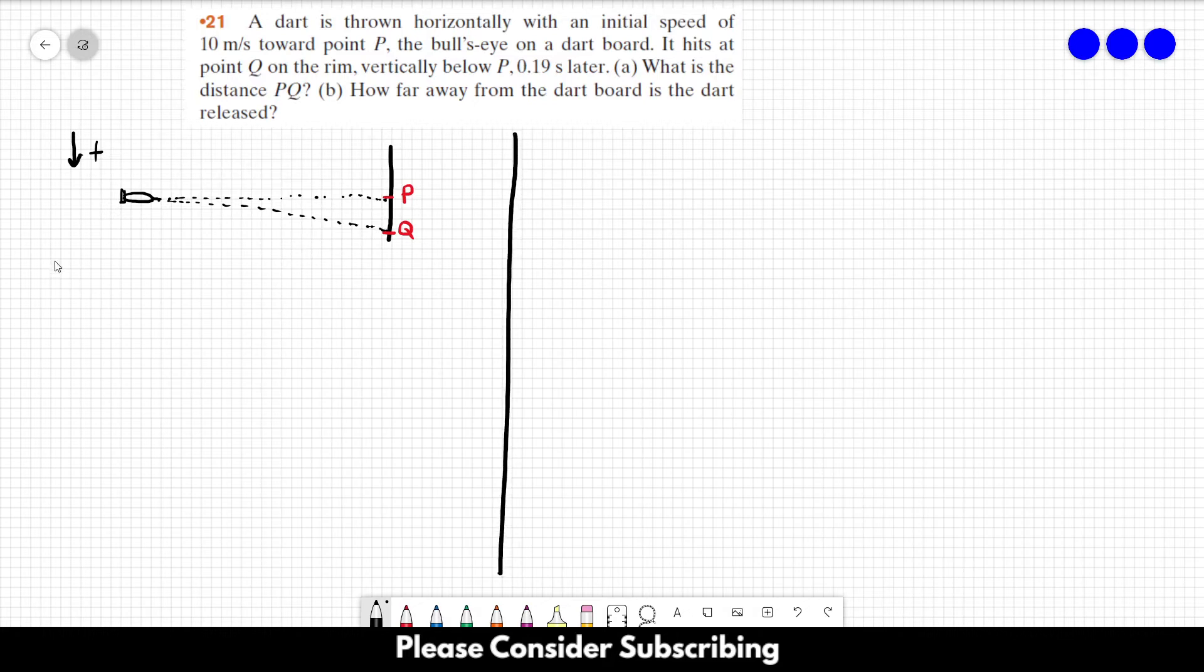So we know that the initial velocity in the x direction is equal to 10 meters per second, and the initial velocity in the y direction is equal to zero because the dart is initially in the horizontal direction. So this speed over here is in the x direction.